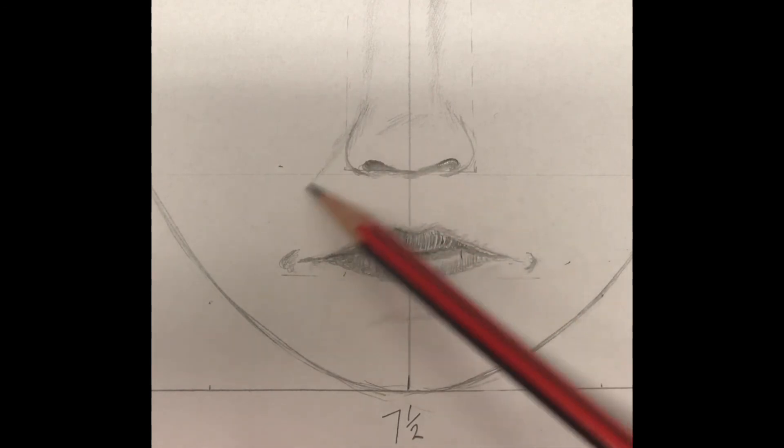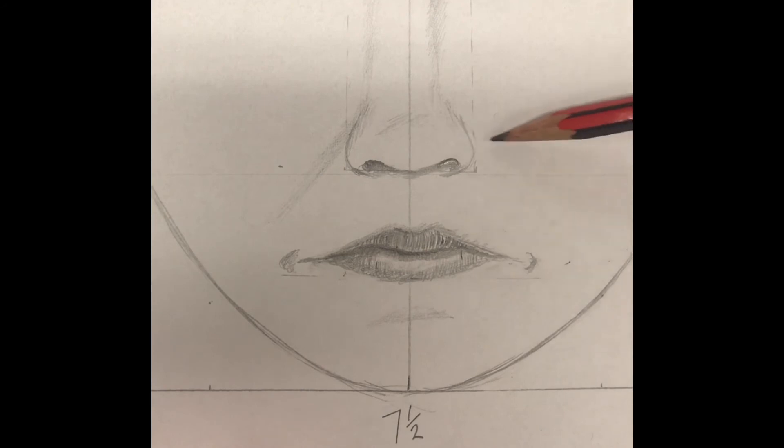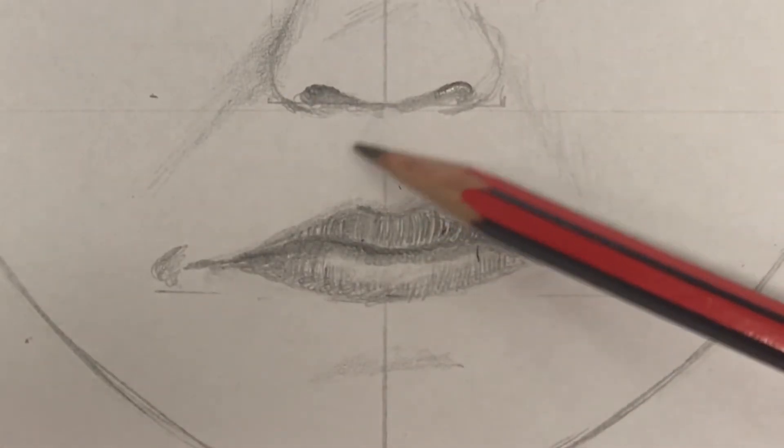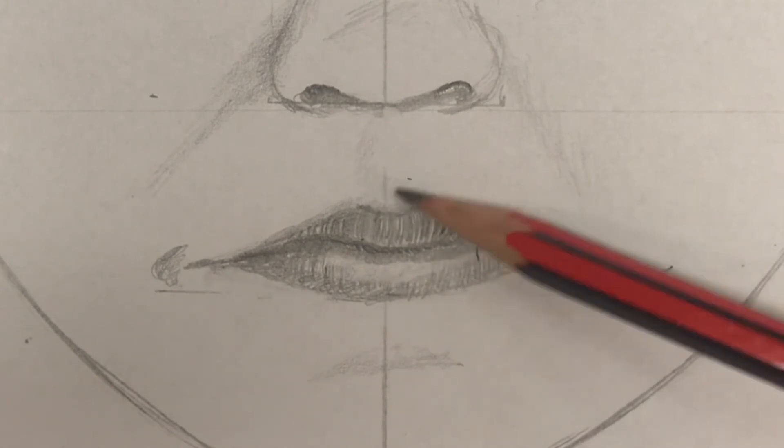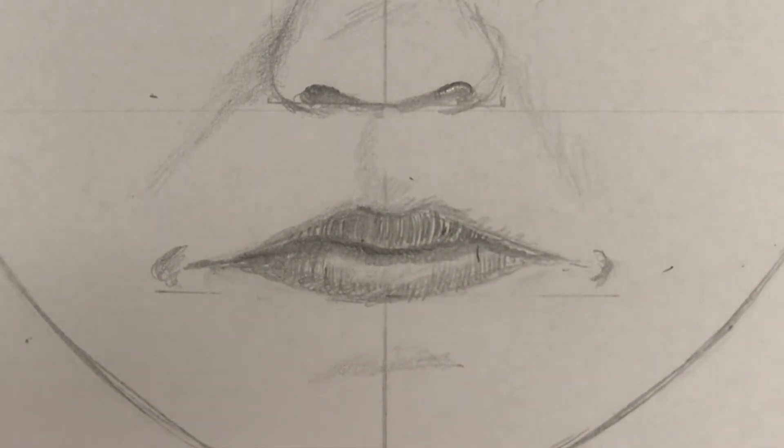Next step is to add a shadow just from the nostril down in a curve. This starts to form the cheeks. Below the nostril, you want to add a shadow that reaches towards the lip in a slight curved C shape.